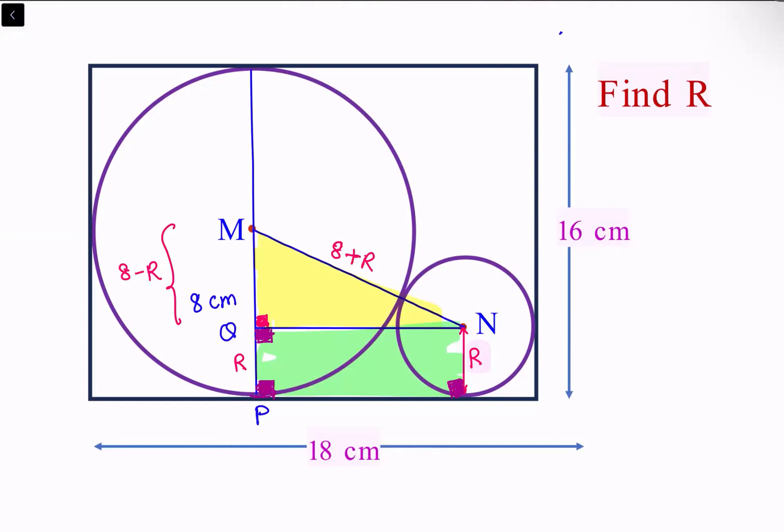Now the third side is left, that's QN. If we can find QN, the job will be done. I'm naming this point here as A. Since this is a rectangle, QN and PA are equal. Let's see if we can find PA.